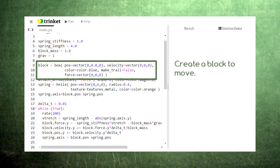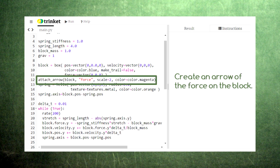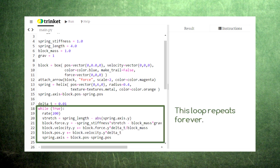Then we create the visuals for our code's animation, the block and the spring. Here we attach an arrow to the block that will indicate the total amount of force acting on the block. Then we enter something called a while loop. This while loop will repeat all of the indented lines.